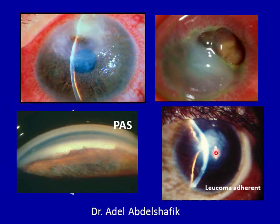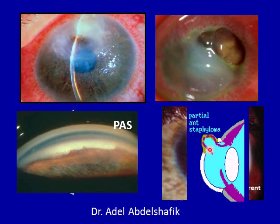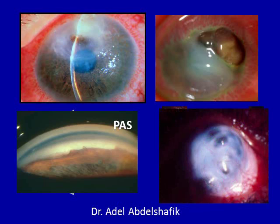Sometimes this fibrous tissue area is weak and begins to bulge — this is called partial anterior staphyloma. Staphyloma means ectasia of the outer coat lined by the inner coats; here the outer coat is the cornea and the inner coat is the iris. Partial means it affects only part of the cornea, with certain points bulging more than others.